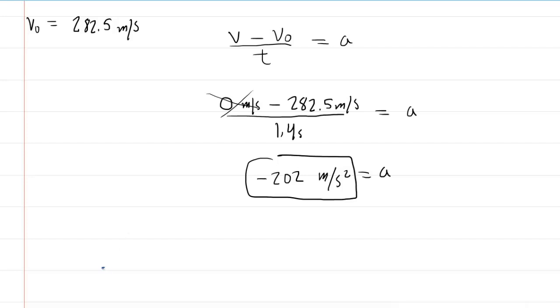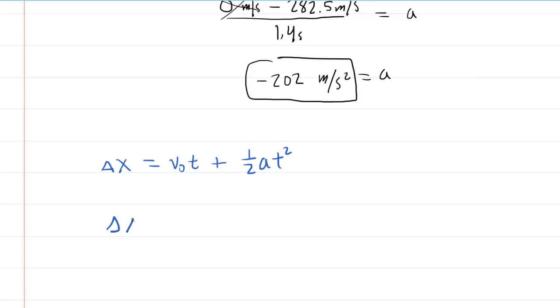So we'll come down here. We'll rewrite that equation as delta x equals initial velocity multiplied by time plus 1/2 acceleration times time squared. And then we just plug in the known values. Again, that initial velocity, once we converted it, was 282.5 meters per second. We'll multiply that by the time interval of 1.4 seconds plus 1/2 times the acceleration that we just determined in part A multiplied by the time value squared. Don't forget to square that time value.